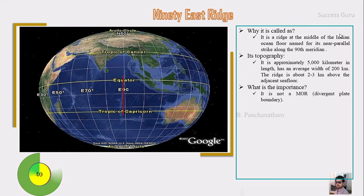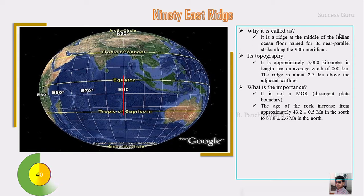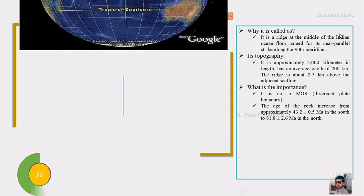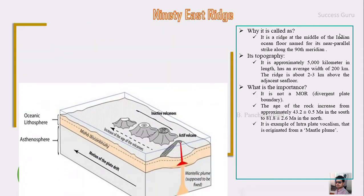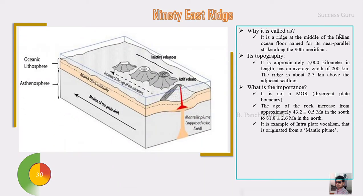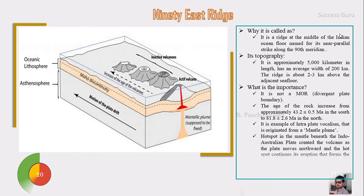The ridge is about two to three kilometers above the adjacent sea floor. It is not a mid-oceanic ridge — that is, it is not a divergent plate boundary. The age of the rock increases from south to north: 43.2 million years in the south and 81.8 million years in the north.